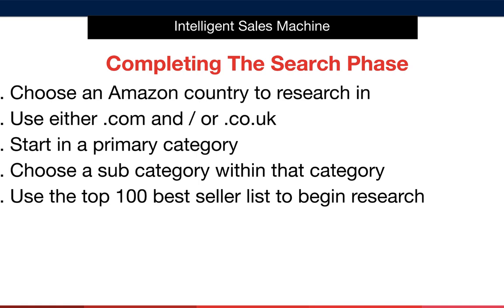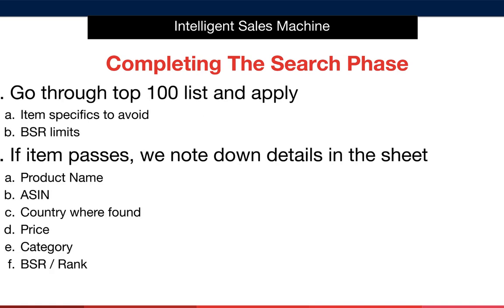Starting in a primary category gives you plenty of practice and won't force you to alter your BSR limits too much. There are also incredible opportunities there waiting for you to find, brand, import, and sell. We'll then choose a subcategory within the parent category and begin our search by locating and working through the top 100 bestsellers in that subcategory. You are unlikely to find something you'll sell in the top 100, but we start here for practice and to get a feel for what works. We'll apply our item specifics to avoid and use BSR limits to determine if an item has viable demand.